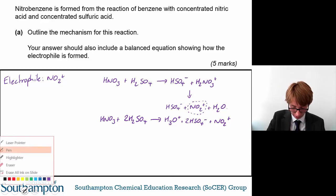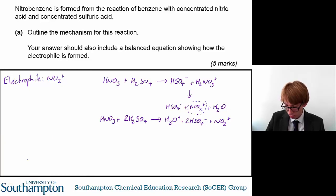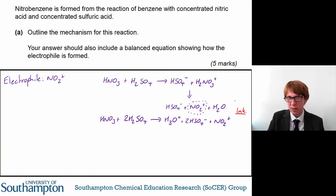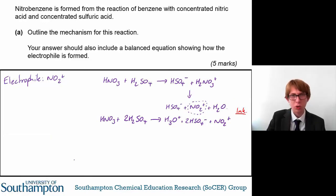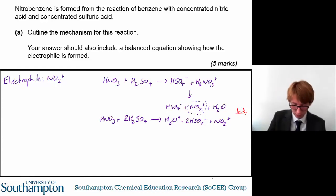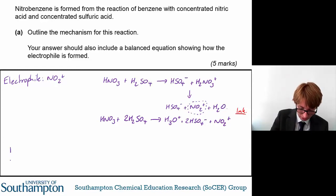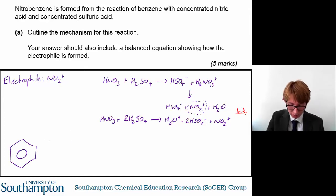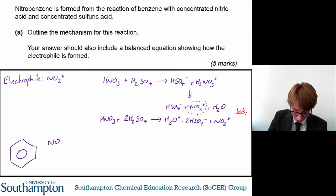If you get one of those equations, you get one mark. Now, I haven't left myself with much room to draw the mechanism, but we'll try our best. So from here, you have benzene — it's a really bad benzene ring, but we'll go with it — and you also have NO2+.